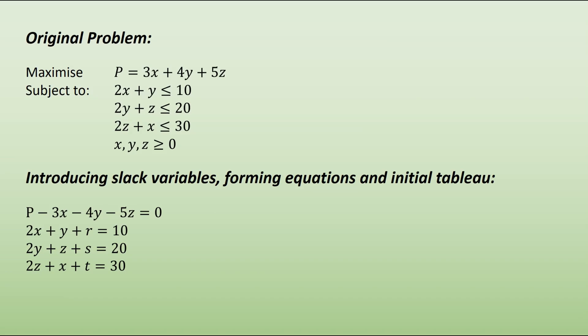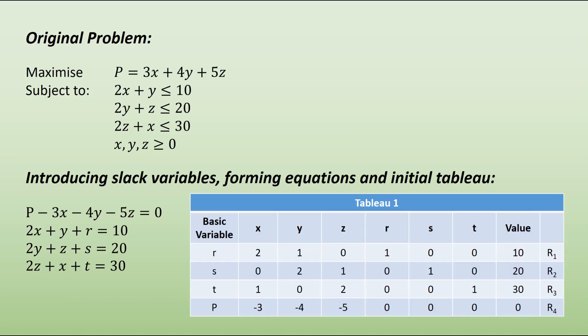The initial tableau thus looks like this. In our basic variable column, we have each of the slack variables r, s, and t. I always include a row for p. We've then got columns for each of our standard variables x, y, and z, each of our slack variables r, s, and t, and we've got the value that we currently have for those expressions.